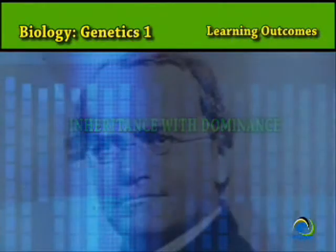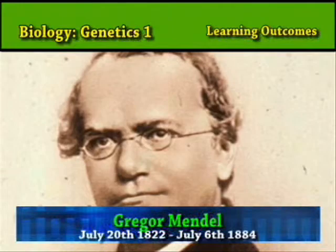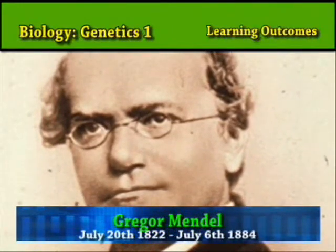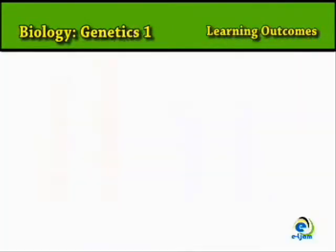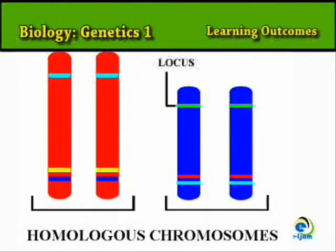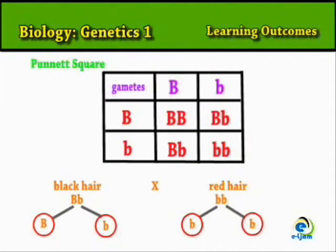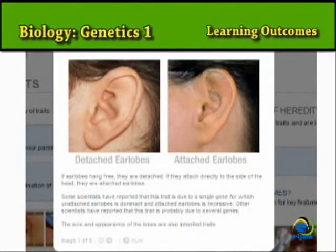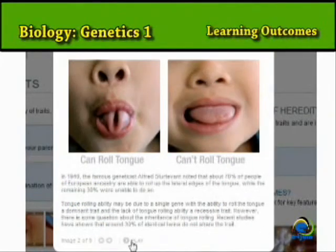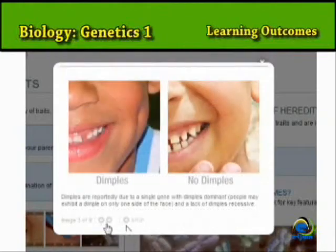Inheritance with dominance. Gregor Mendel, the father of genetics, discovered the following rules. Genes normally exist in pairs, one of which may be expressed and is therefore dominant, and the other recessive. In a gamete, only one of the two genes is present. If the dominant and recessive genes are present together in an individual, it is the dominant one which produces an effect.